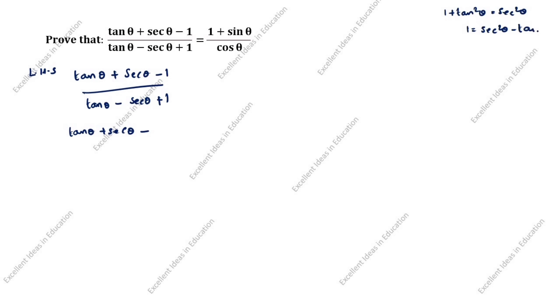Next, what we will do is use the split identity method. We know that 1 plus tan squared theta equals secant squared theta, so 1 equals secant squared theta minus tan squared theta. So the value of 1 is secant squared theta minus tan squared theta.